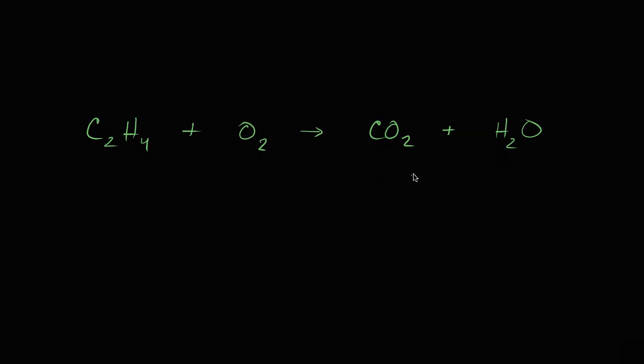And so I would want two carbons on the product side. And right now I only have one carbon on the product side. And so what we've done is let's just put a two out front here. And so now we have two for every molecule of ethylene. And we're not done balancing this chemical equation yet. We're now producing two molecules of carbon dioxide.